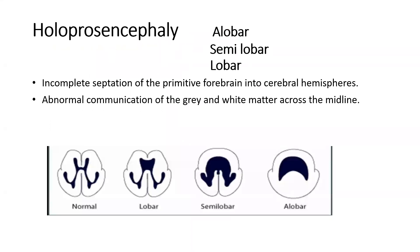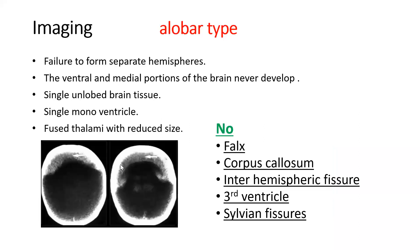In holoprosencephaly, there are three types: alobar, semilobar, and lobar. In all types there is incomplete separation of the primitive forebrain into cerebral hemispheres and abnormal communication of gray and white matter across the midline. In alobar type, there is failure to form separate hemispheres; ventral and medial portions of the brain never develop; single looped brain tissue; single monoventricle; fused thalami with reduced size; and absent falx, corpus callosum, interhemispheric fissure, third ventricle, and sylvian fissures.